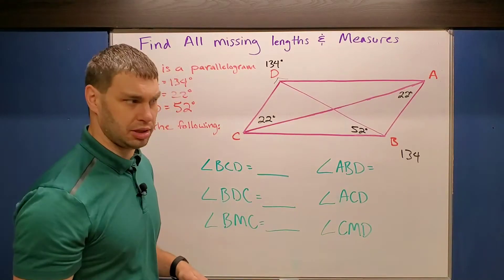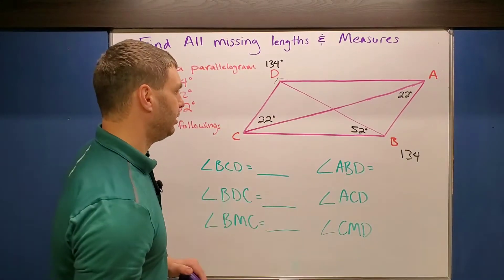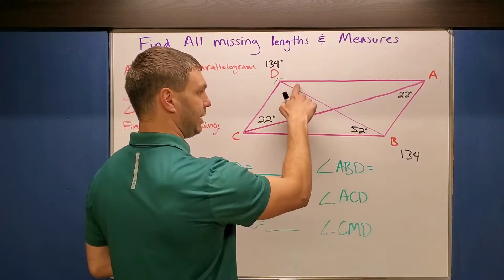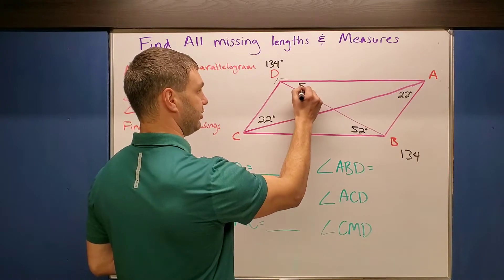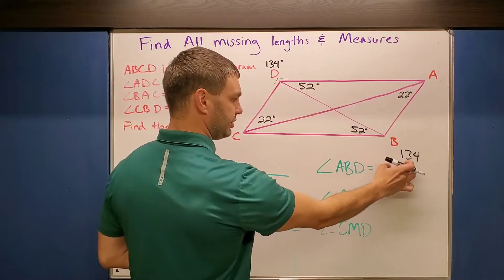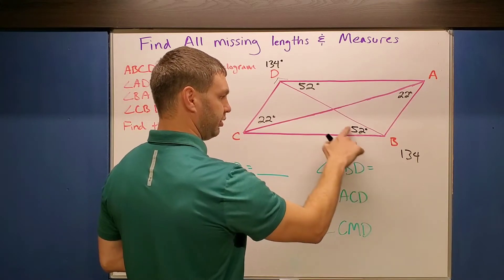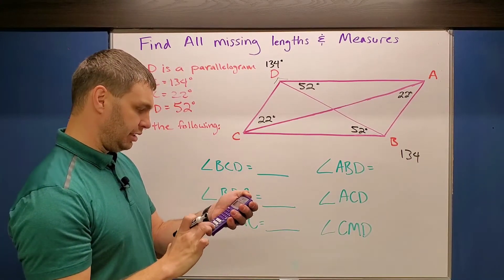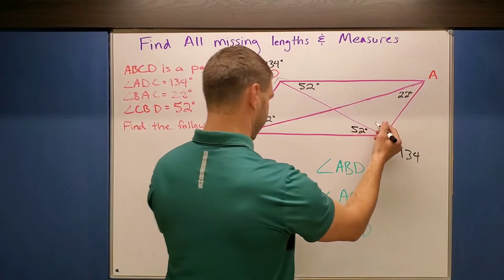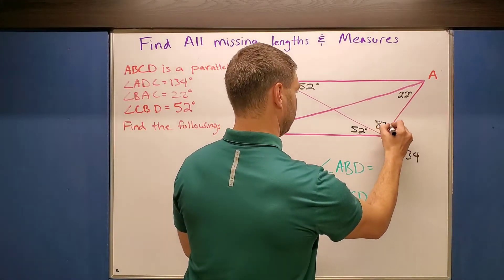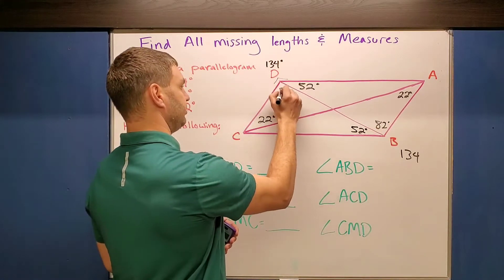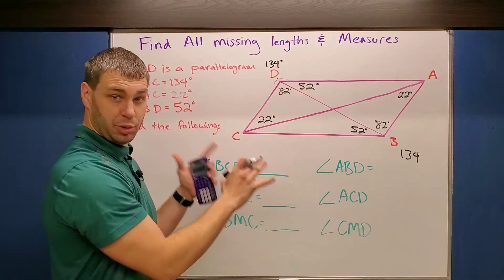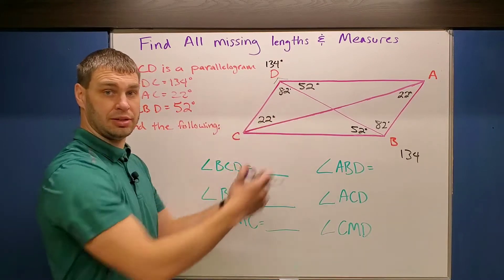Same thing on this one: 52 degrees on the other side. And then since the whole thing is 134 and this is 52, go 134 minus 52 to see what that other side is. This happens to be 82 degrees, and this would also be 82 degrees. That's just putting the given information into our diagram, and now we're going to try to find some of these different missing values.